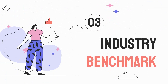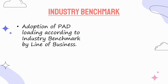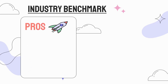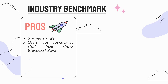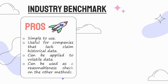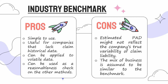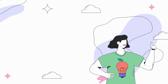The third method is the industry benchmark. Industry benchmark is the adoption of provision for adverse deviation loading according to an industry benchmark by line of business — that is, a simple average of provision for adverse deviation from different companies. The pros are: it is simple to use, it is useful for companies that lack claim historical data, it can be applied to volatile data, and it can be used as a reasonableness check on the other methods. The cons are: the estimated provision for adverse deviation might not reflect the company's true variability of claim liability, and the mix of business is assumed to be similar to the benchmark.